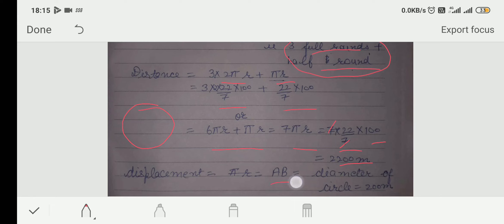Displacement is AB. That is diameter of circle. Why? Because, for 3 full circle displacement is 0. For half circle displacement will be diameter. As I have discussed with you many times. So, diameter is already given in statement. So, you will write directly that displacement is equal to 200 meter.